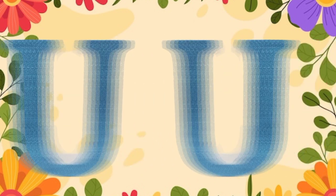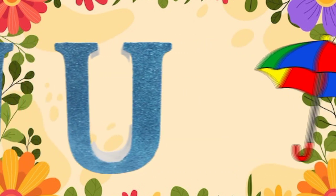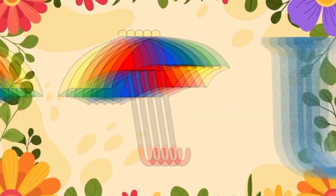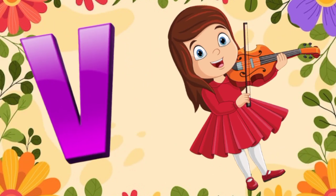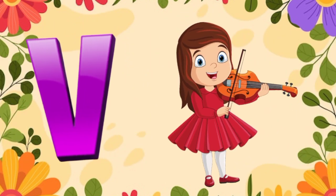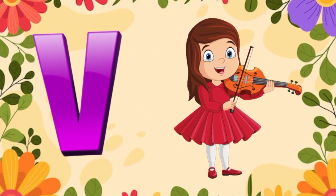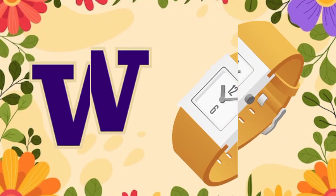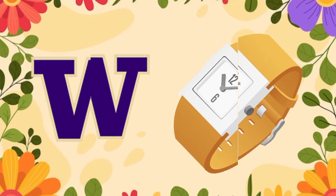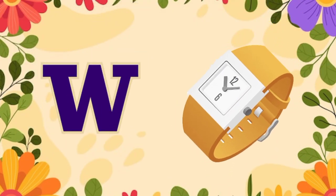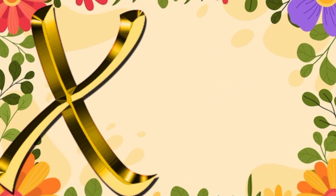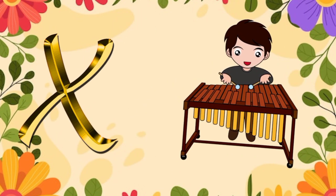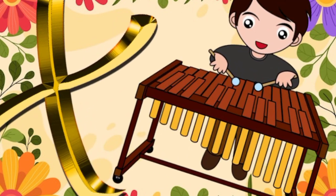U is for umbrella, u-u-umbrella. V is for violin, v-v-violin. W is for watch, w-w-watch. X is for xylophone, z-z-xylophone.